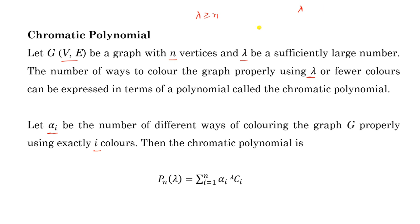Suppose we have lambda colors — lambda is a large number. We will start with one color, then two colors, and up to n colors. We move up to n colors only because any graph with n vertices can be properly colored with n colors, so we need not go beyond n colors.